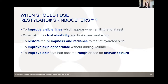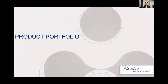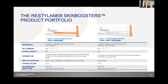Skin boosters are a natural-looking option for those who want improvement without changing facial shape. They address rough or uneven texture, creepy skin, and fine lines. They are also a go-to for treating atrophic acne scars and textural changes. Vital contains 20 mg/mL HA and Vital Light contains 12 mg/mL HA; both are soft formulations premixed with lidocaine.